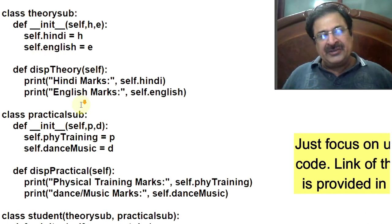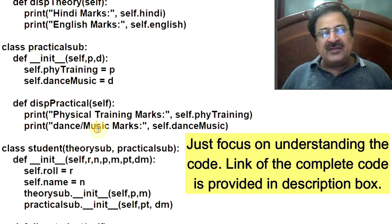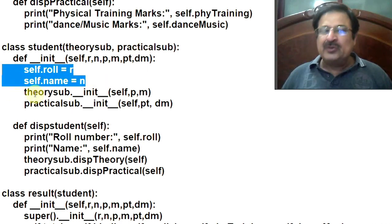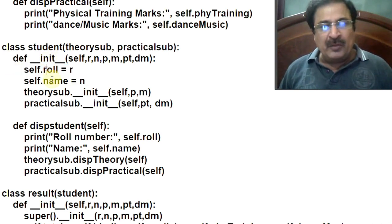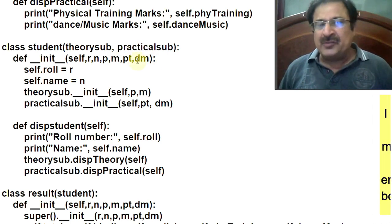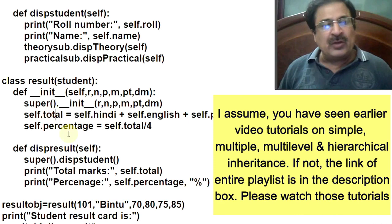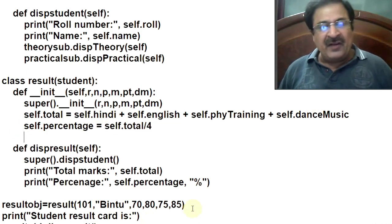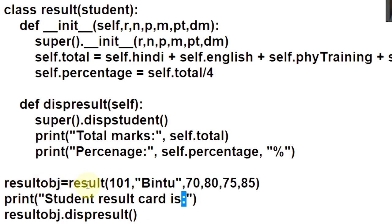This is the code: Theory Sub class deals with Hindi and English marks. Practical Sub class deals with physical training marks and dance music marks. Student class inherits Theory Sub and Practical Sub and adds role number and name attributes. The Result class calculates total as Hindi plus English plus physical training plus dance music marks, and percentage as total divided by 4. From main, an object result_obj of Result class is created with six arguments: 101, bin2, 70, 80, 75 and 85 — role number, name, Hindi, English, PT and dance music marks.